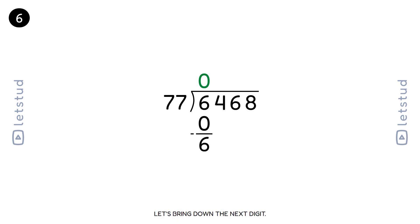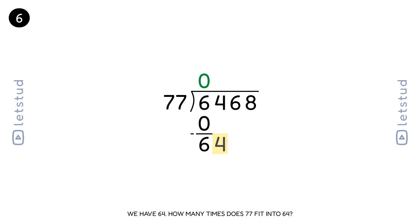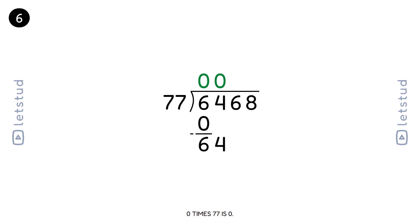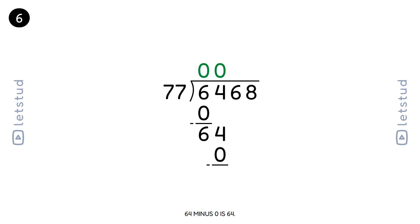Let's bring down the next digit. We have a remainder of 6 and bring down the 4 to make 64. 77 fits into 64 zero times. 0 times 77 is 0. 64 minus 0 is 64.